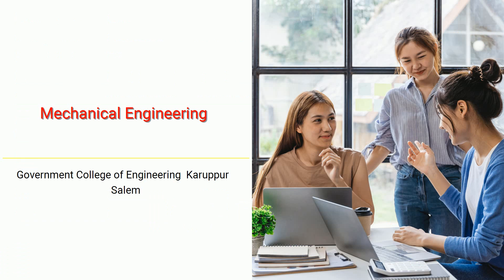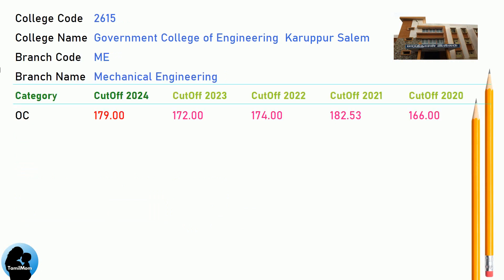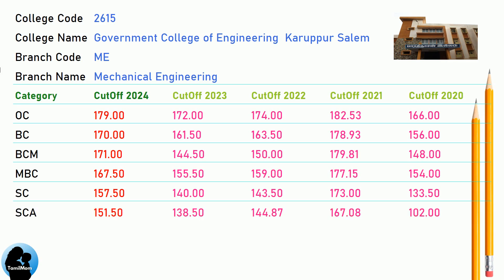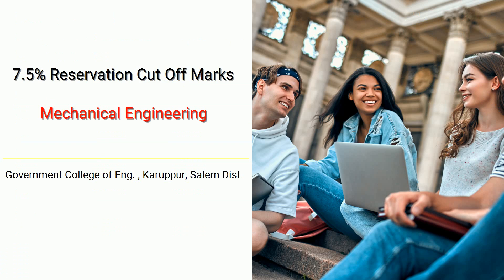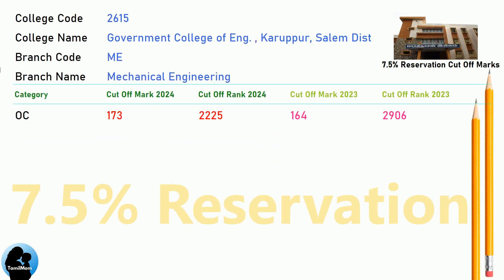DNEA Cut-off for Government College of Engineering, Karupur, Salem in Mechanical Engineering. DNEA 7.5 Reservation Cut-off for Government College of Engineering, Karupur, Salem District in Mechanical Engineering.